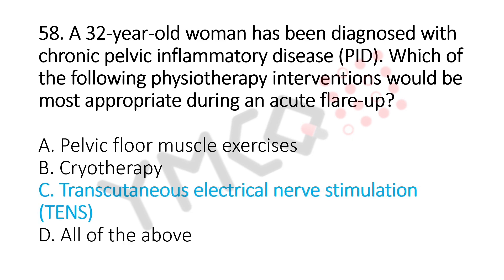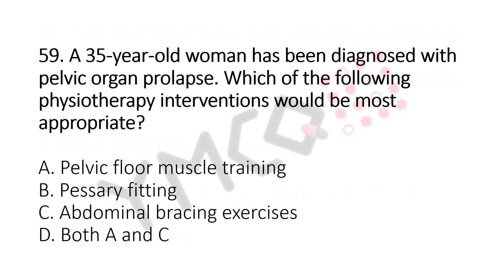Now let's move to question number 59. A 35-year-old woman has been diagnosed with pelvic organ prolapse. Which of the following physiotherapy interventions would be the most appropriate? Option A, pelvic floor muscle training. Option B, pessary fitting. Option C, abdominal bracing exercises. Option D, both A and C. And the answer is Option D, both A and C.